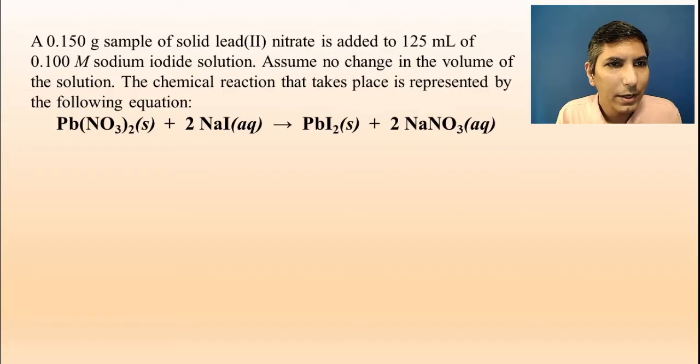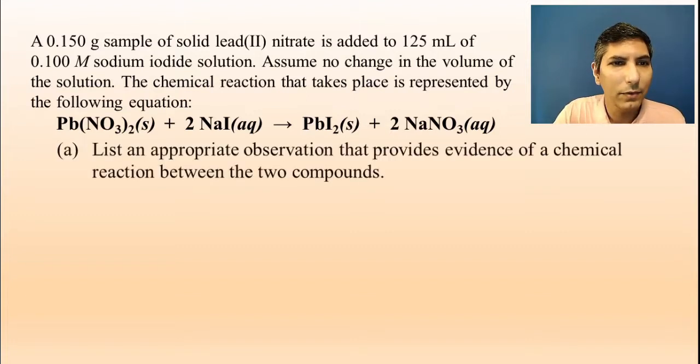Here's the problem. We have a balanced equation. It says that we're taking a 0.150 gram sample of solid lead(II) nitrate, and it's being added to 125 milliliters of 0.100 molar sodium iodide solution. Assume no change in the volume of the solution when you add these two substances together, and we have the reaction.